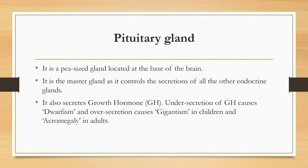Under secretion of GH, that is growth hormone, causes dwarfism. Over secretion causes gigantism in children and acromegaly in adults.